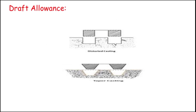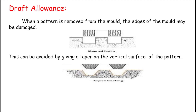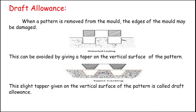The next one is draft allowance. When a pattern is removed from the mold, the edges of the mold may be damaged due to square or complicated shapes. To avoid this, we increase some taper on the vertical surface of the pattern. This slight taper given on the vertical surface of the pattern is called draft allowance. Due to the tapered surface, the mold will not be distorted or destroyed. Draft allowance is usually 3 mm per meter.